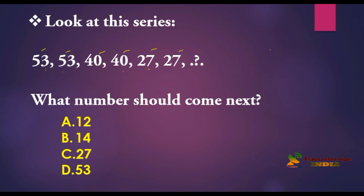We need to crack it out. 53 minus 40 is equal to 13. Again, just cross check with 40 minus 27, which again gives us 13. Here the logic is each number is repeating and at the same time it's subtracted with 13.